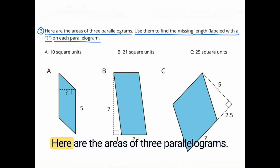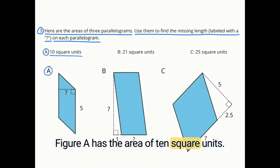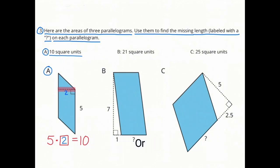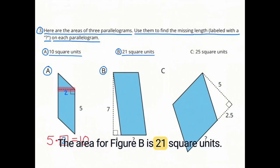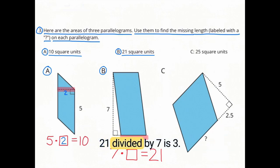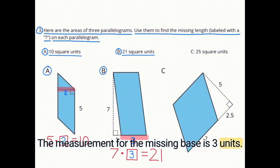Number 3. Here are the areas of three parallelograms. Use them to find the missing length, labeled with a question mark, on each parallelogram. Figure A has the area of 10 square units, the base is 5, and the height is unknown. 10 divided by 5 equals 2, or 5 times 2 equals 10. The area for figure B is 21 square units. The height is 7, and the base is missing. 21 divided by 7 is 3, or 7 times 3 is 21. The measurement for the missing base is 3 units.